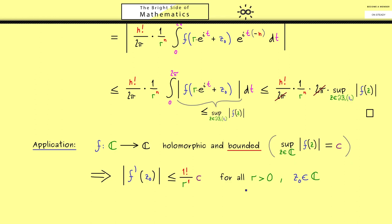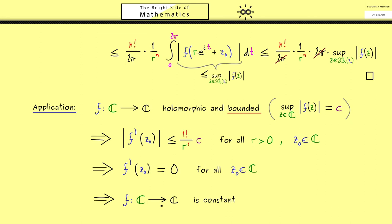However here you should see we can make the right hand side as small as we want when we increase r as much as we want. Therefore the only possibility for the left hand side is that it is 0. So in other words the first derivative has to vanish. And now we know for our connected domain that this implies that the function f is constant. Only a constant function can have a derivative that vanishes everywhere.